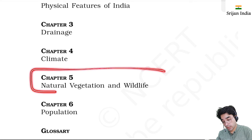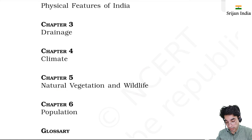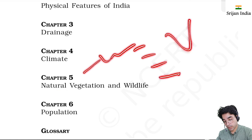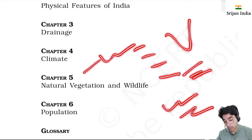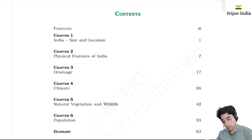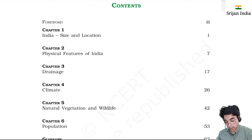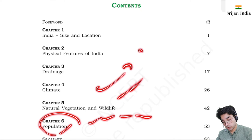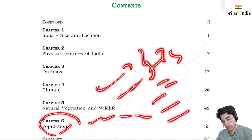Chapter 5 is natural vegetation and wildlife. We saw flora and fauna, types of forest - deciduous, tropical deciduous, their features. Then we read about population - India's demographics, literacy rate, population density, job profile, work-related geography, economy, etc.